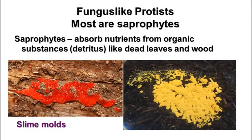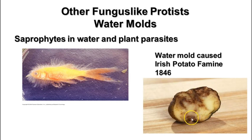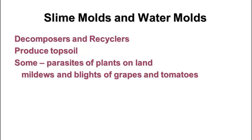The fungus-like protists include slime molds and water molds. Most of the fungus-like protists are saprophytes, meaning they absorb nutrients from dead organic material like leaves and wood. Slime molds live in damp, forested areas and are sometimes very bright colors. Water molds are also fungus-like protists — there are saprophytes in water and also some plant parasites. A particular kind of water mold caused the Irish potato famine in 1846. Most slime molds and water molds are decomposers and recyclers of nutrients, and some are also parasites of plants like mildews and blights found with grapes and tomatoes.